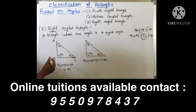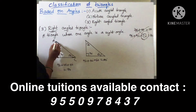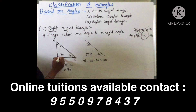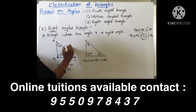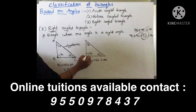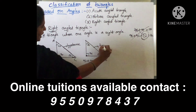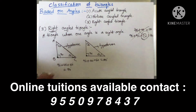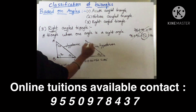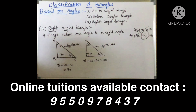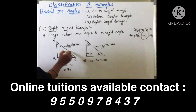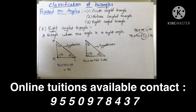An important point: the side opposite to 90 degrees — the side opposite to the right angle — is called the hypotenuse. For triangle ABC where angle B is 90 degrees, the side AC is the hypotenuse. And the hypotenuse is the longest side in a right angled triangle. So the side opposite to the right angle is called hypotenuse, and hypotenuse is the longest side in a right angled triangle.